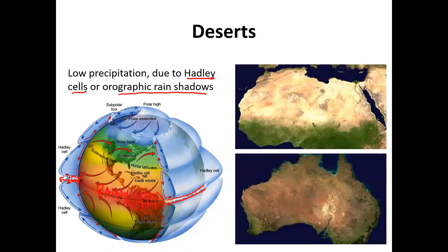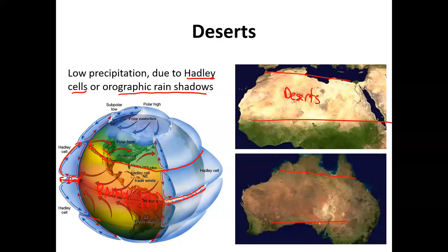That air that has rained all of its moisture out is now dry, and it rises in this cycle called a Hadley cell to about 30 degrees north and south. At these areas that dry air sinks, and because it's dry, you get very little rain around 30 degrees north and south. That cycle of warm, moist air rising, becoming dry air, and then sinking and accumulating moisture as it approaches the equator is called a Hadley cell.